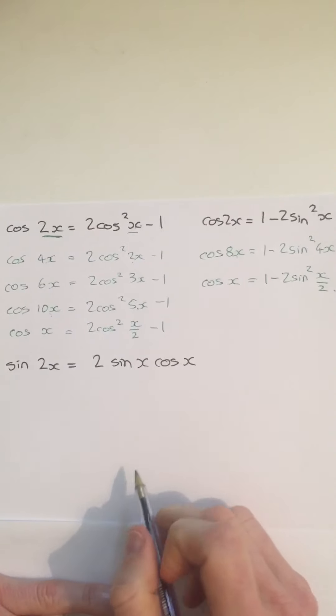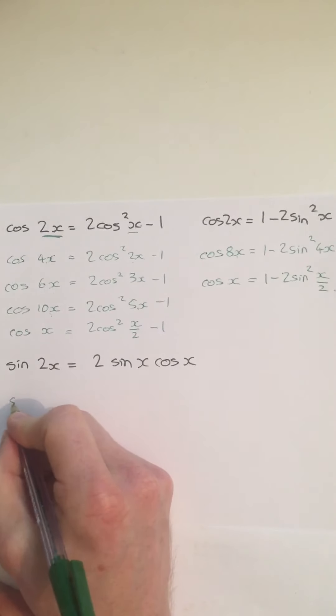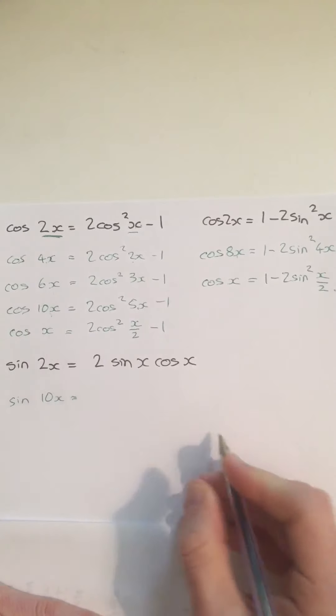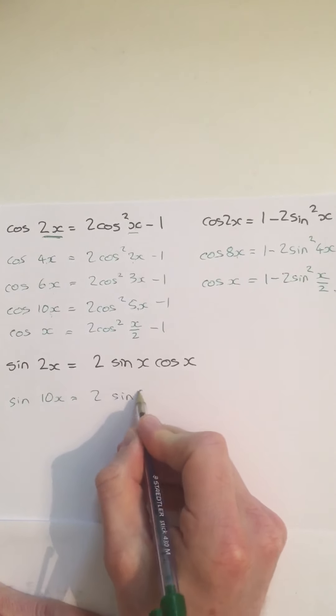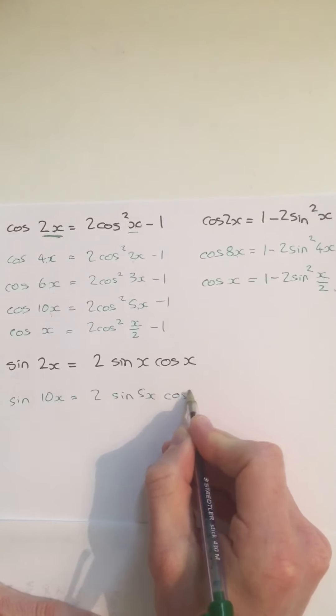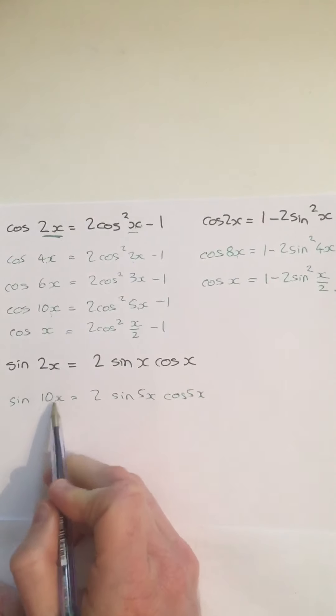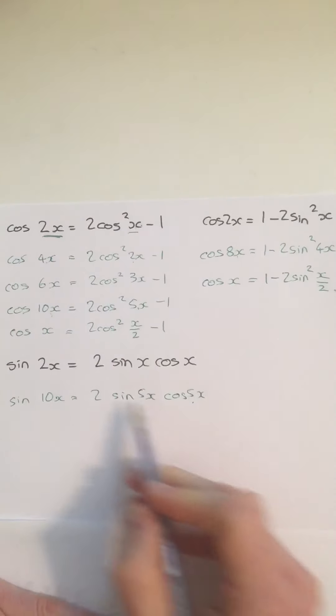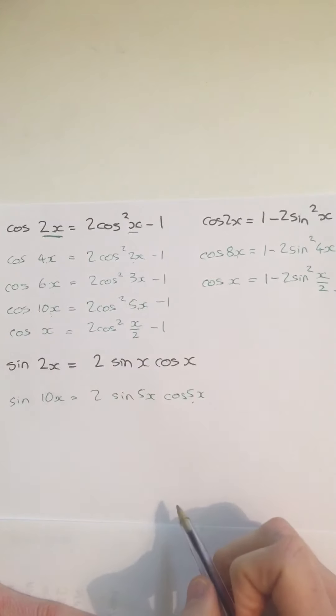We could do exactly the same thing with the sine double angle formula. I could say sine 10x is equal to 2 sine 5x cos 5x. Times this by 5, times this by 5, and this by 5. So it would work for the sine double angle as well.